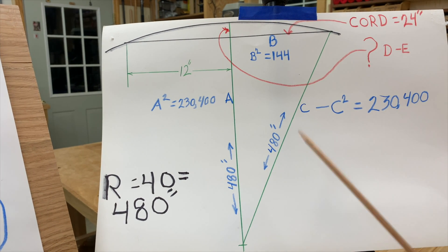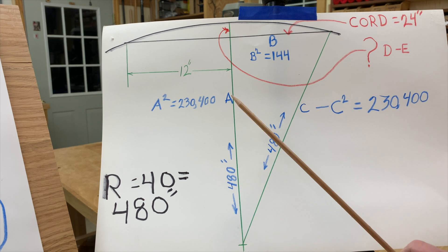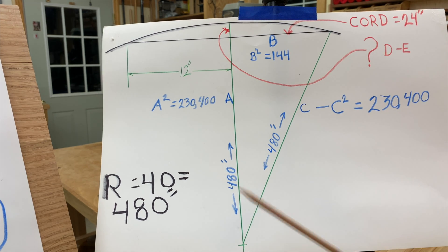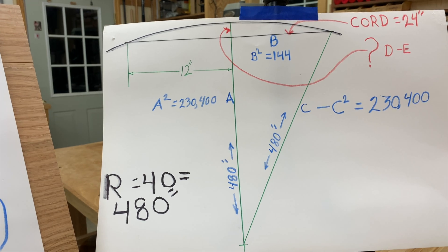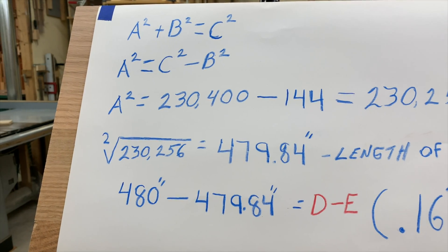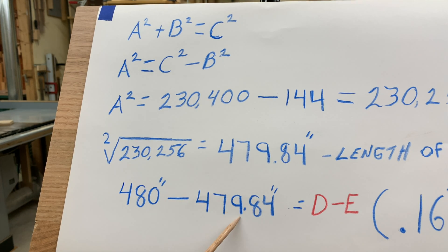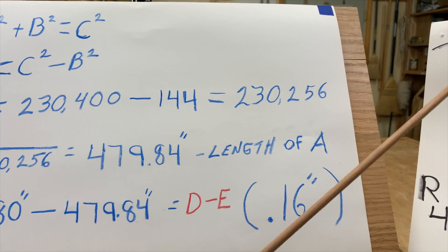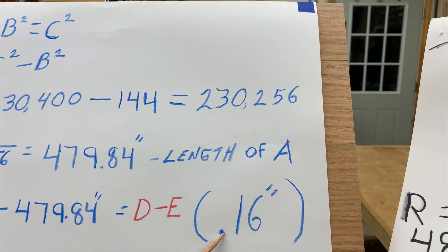We'll refer back to this line A. Keep in mind that this length we've just calculated is from the chord to the center point of that circle — it does not include distance dE. But we do know that the full length of that radius is 480 inches. So if we subtract 479.84 — the length of line A in the triangle — the result we get for distance dE is 0.16 inches. Just as simple as can be.